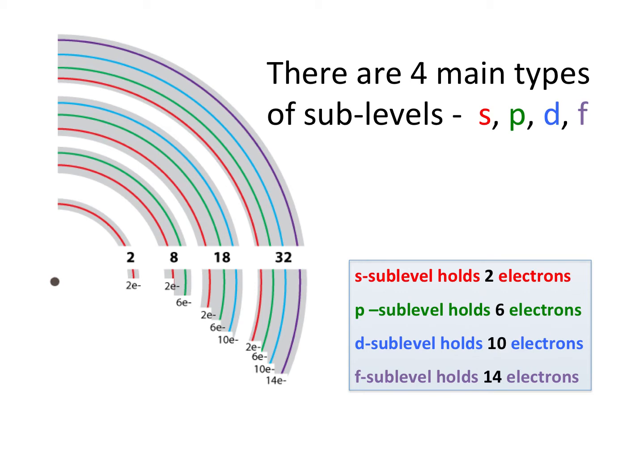The second principal energy level has a total of eight electrons, subdivided into two sublevels. There is an S sublevel which holds two electrons, and a P sublevel that holds six. Now look at your periodic table — look at the second row, or second period: lithium, beryllium, boron, carbon, nitrogen, oxygen, fluorine, and neon.